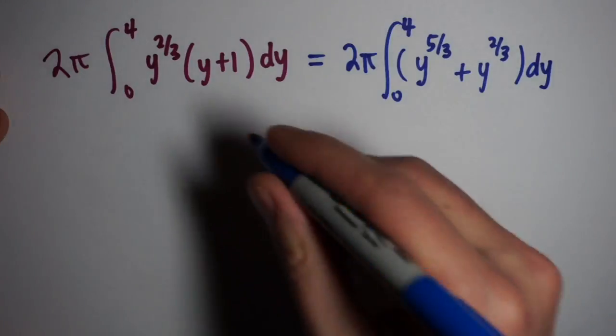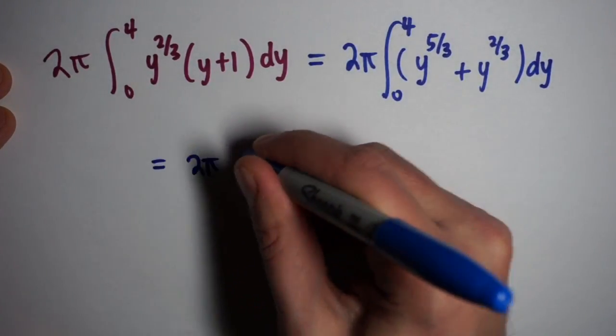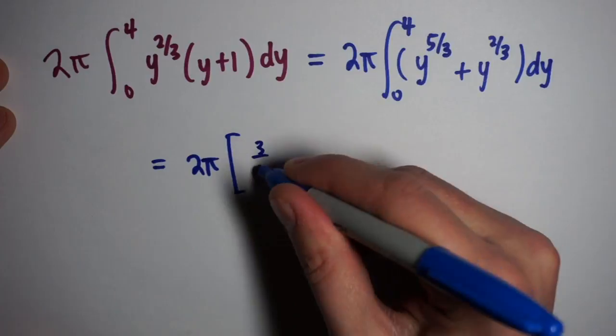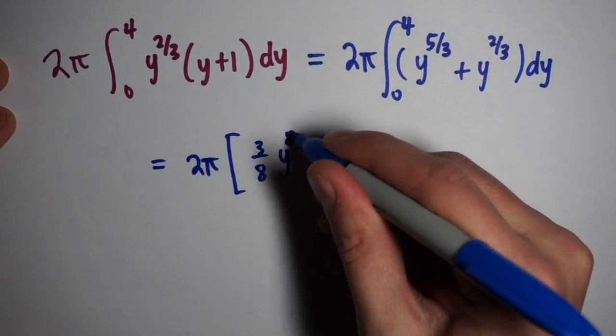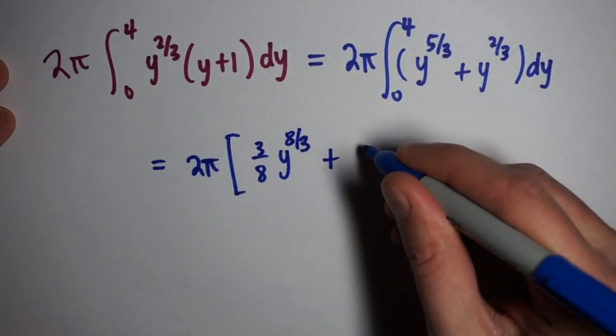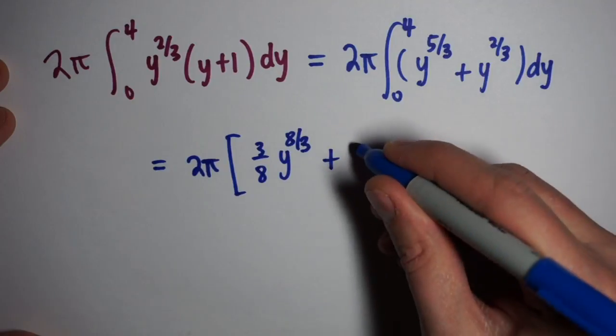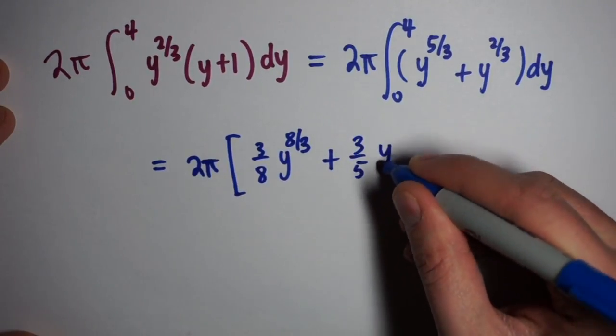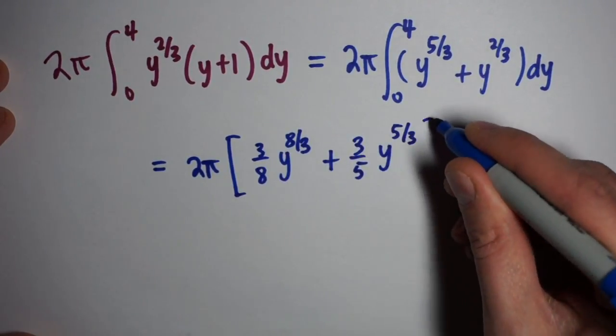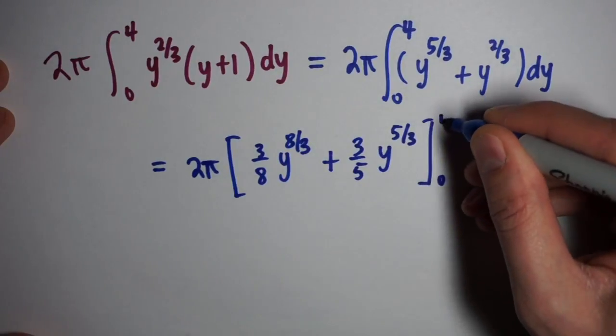Each of these is just a power of y, so the antiderivative is easy to find. We add one to the exponent and divide by that higher number. I get y^(8/3) over 8/3, which is 3/8 y^(8/3), and the same thing here. It'll be 3/5 y^(5/3). We're going to evaluate this between 0 and 4.